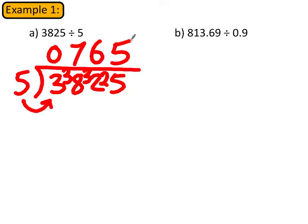Now let's try a more complicated one. We've got 813.69 divided by 0.9. Now this is a very difficult question to do, so if you've got a decimal like this, a good idea is you can recognize that you can times both these two numbers by 10 and you're going to still get the same division.